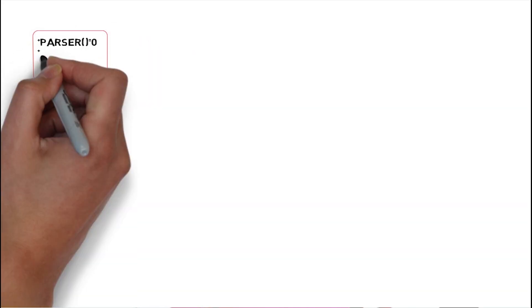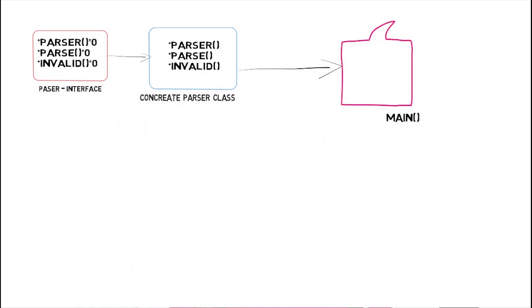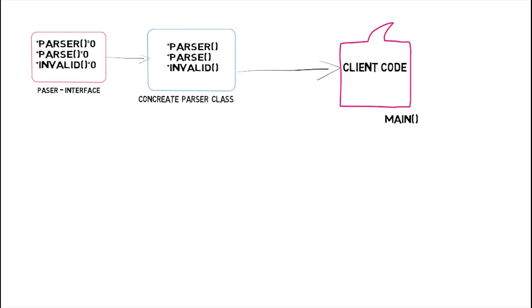For example, let's say you have one interface called the XML parser, and in that interface you have two functions called parse and parsing. From this interface you have one concrete class, as you can see on your screen. This class is interacting directly with my client code, so right now things work fine.